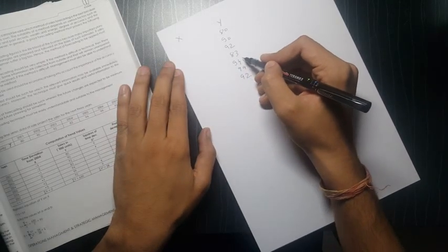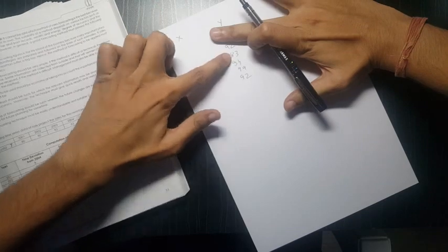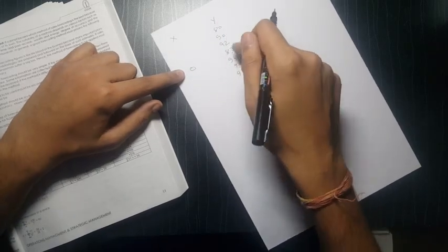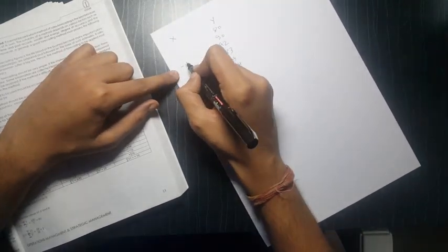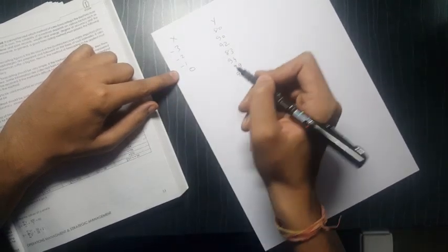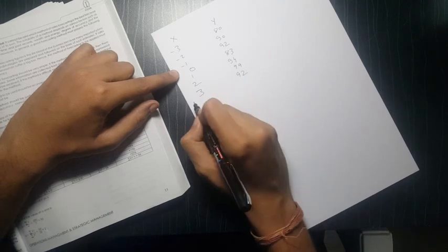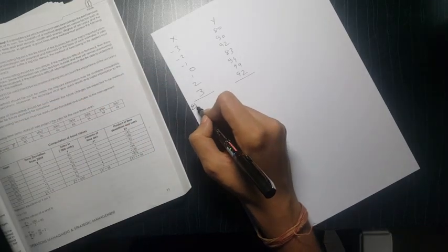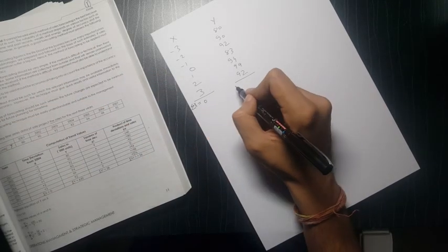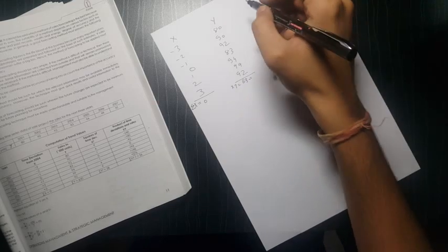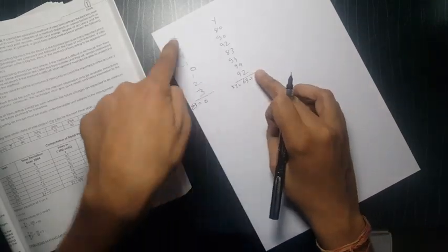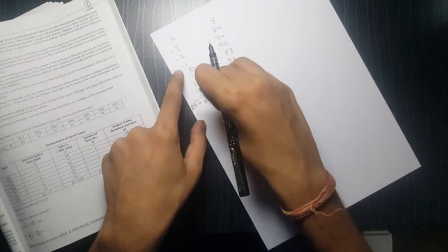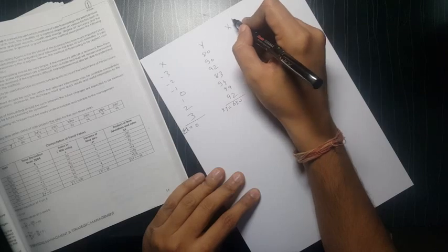So the sales is 80, 90, 92, 83, 94, 99, 92. Yeh sab sales likh diya, this is obviously Y. Sales from the following period, project the sales for next three years. Yeh Y likh diya. Now ek X ka column bana dena: 1, 2, 3, 4, 5, 6, 7. Iska middle point hai 83, iske saamne zero likh do. Right, in the middle point zero. And upwards you move minus 1, minus 2, minus 3. Downwards you move 1, 2, 3.